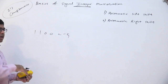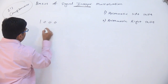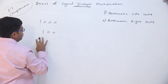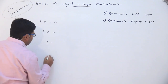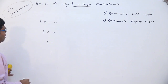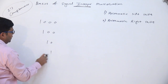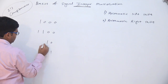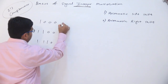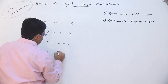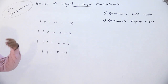Starting with 1 0 0 0, shift by one place to the right — it becomes 1 1 0 0. Again shift to the right — 1 1 1 0. Again shift to the right, but you always extend the MSB while filling the remaining places, so copy this 1. The values are minus 8, minus 4, minus 2, and minus 1. We get the expected behavior of division by 2.